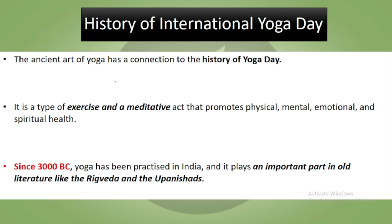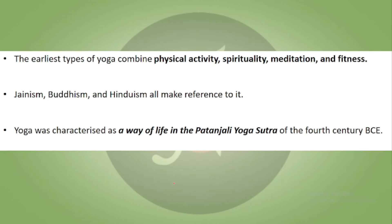Looking at the history, the ancient art of yoga is a type of exercise and meditative practice that promotes physical, mental, emotional, and spiritual health. Since 3000 BC, yoga has been practiced in the Indian subcontinent, and its traces can be found in the Rigveda and other Upanishads. The earliest type of yoga combined physical activity, spirituality, meditation, fitness, and bhakti. References to yoga are found in Jainism, Buddhism, and Hinduism — in most major religions. Yoga was basically a way of life, a tariqa of living.